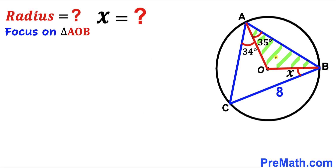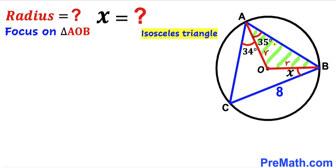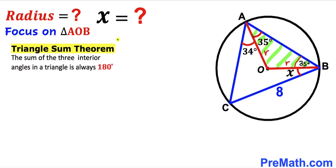We are going to focus on triangle AOB. I'm going to label radius AO as lowercase r and likewise BO as lowercase r as well. We can see that triangle AOB is an isosceles triangle since both AO and BO are radii. Therefore the two base angles are congruent. Recalling the triangle sum theorem — the sum of three interior angles in a triangle is always 180 degrees — let's focus on triangle AOB.